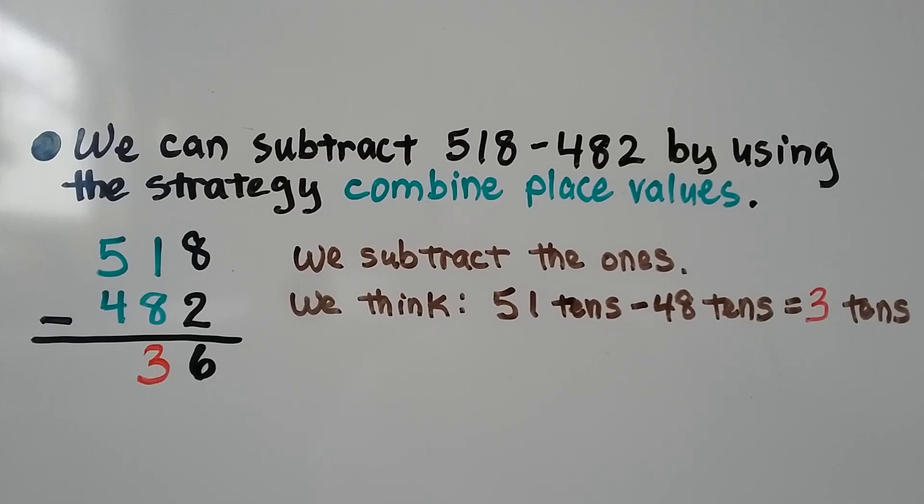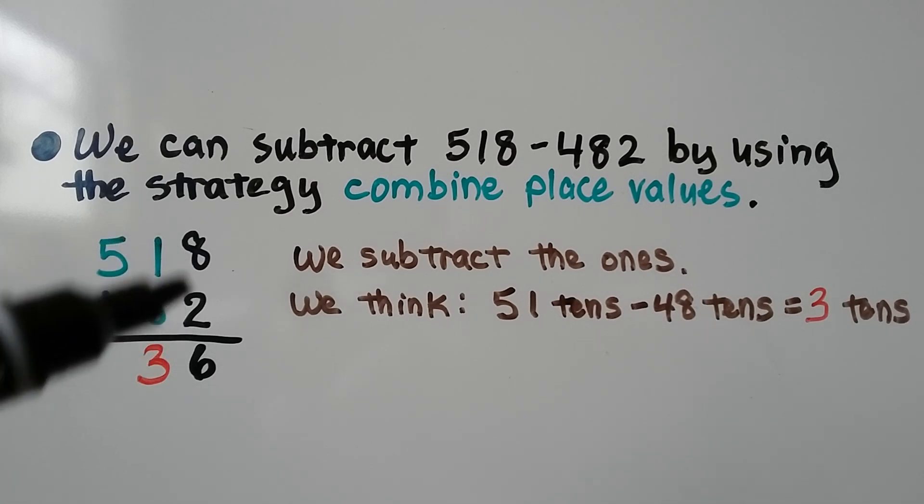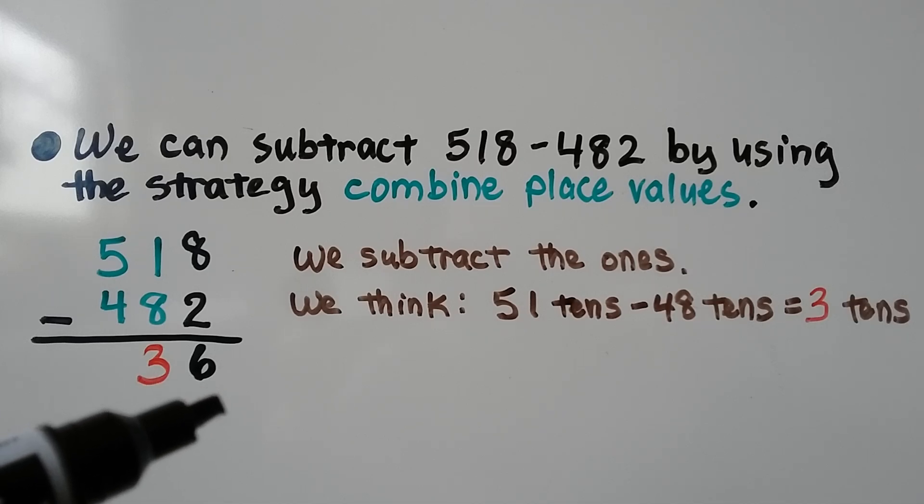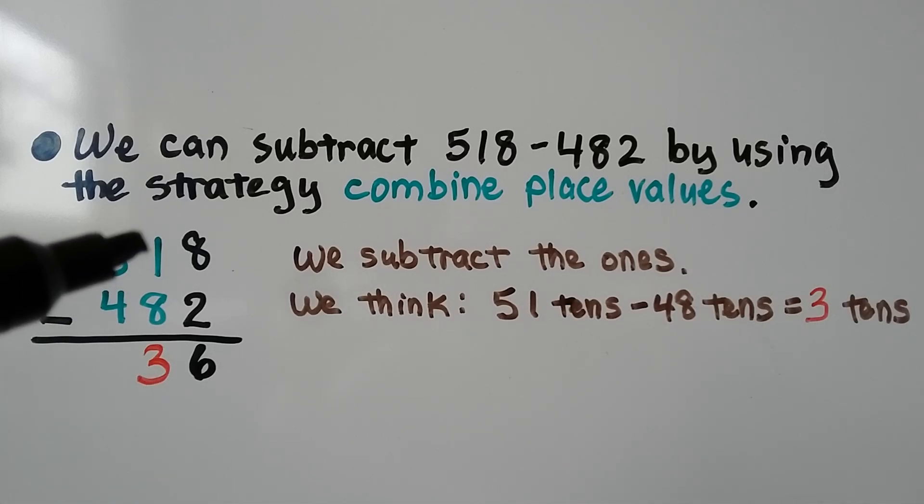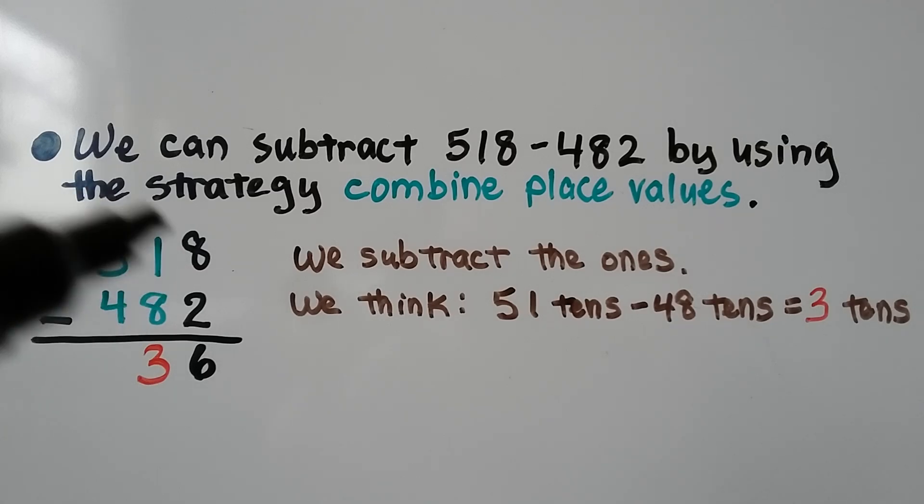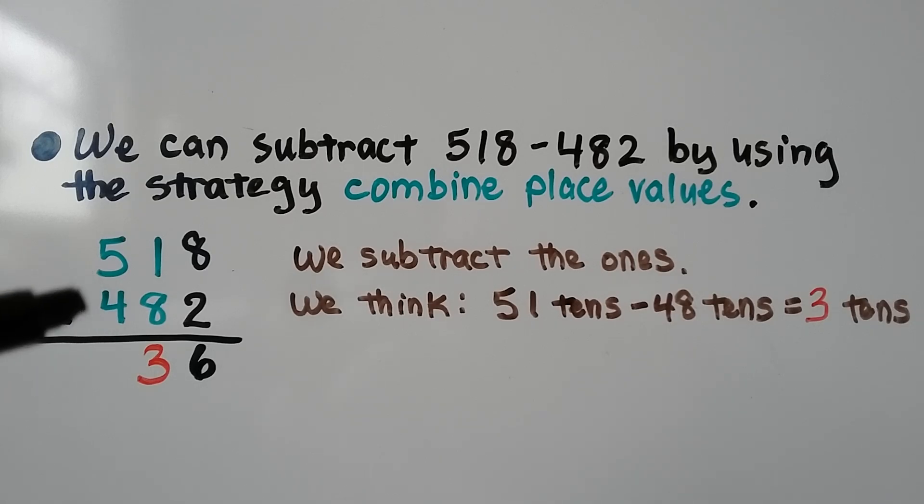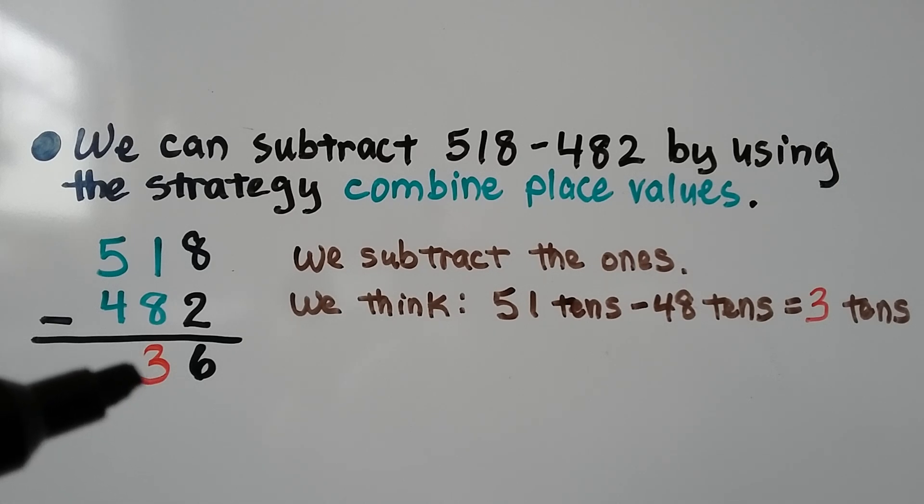We can subtract 518 minus 482 by using the strategy combined place values. We see that the 8 is greater than the 2, so we just subtract the ones. We get a 6. Then we see that this 110 is less than the 810 in the subtrahend. So we think 51 tens minus 48 tens. We can easily count up 48, 49, 50, 51. The difference would be 3 tens, so we put a 3 in the tens place.